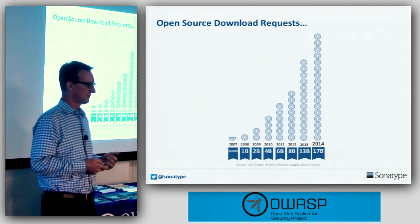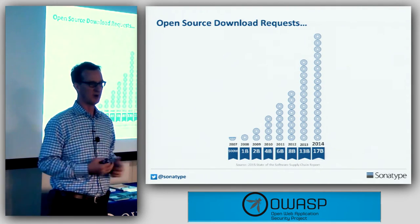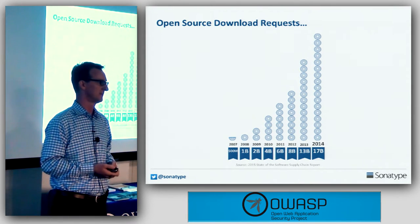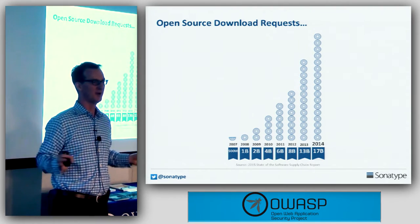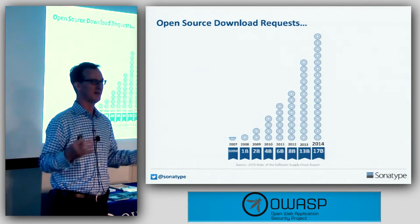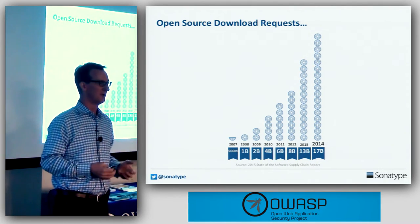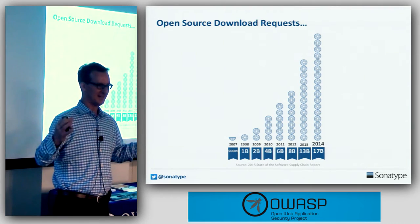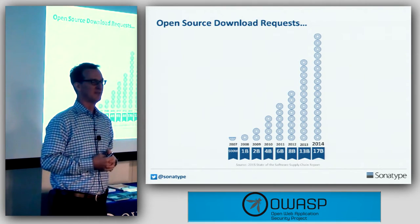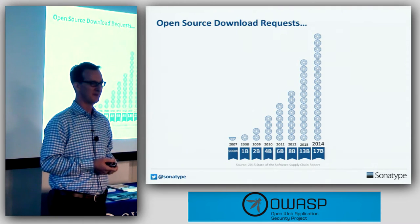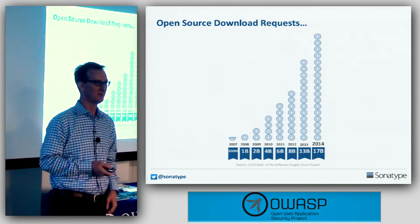Last year the central repository we manage for Java open source components served 17 billion download requests. In any industry anywhere in the world, 17 billion is a gigantic number — even when iTunes does billions of things, that is a lot. The population this serves is about 10 million people — there are only 10 million Java developers in the world.